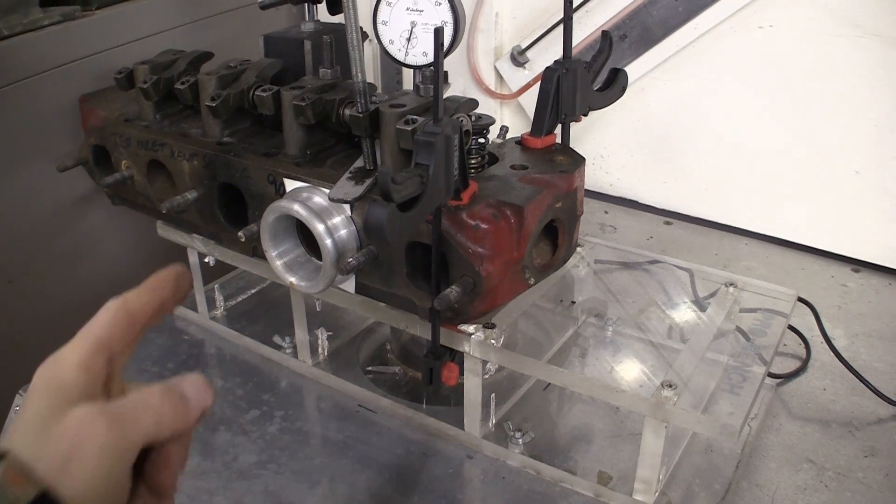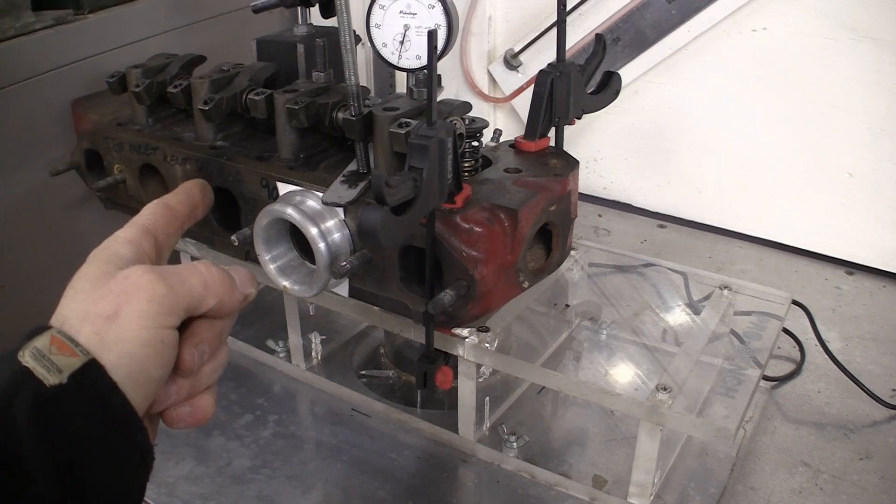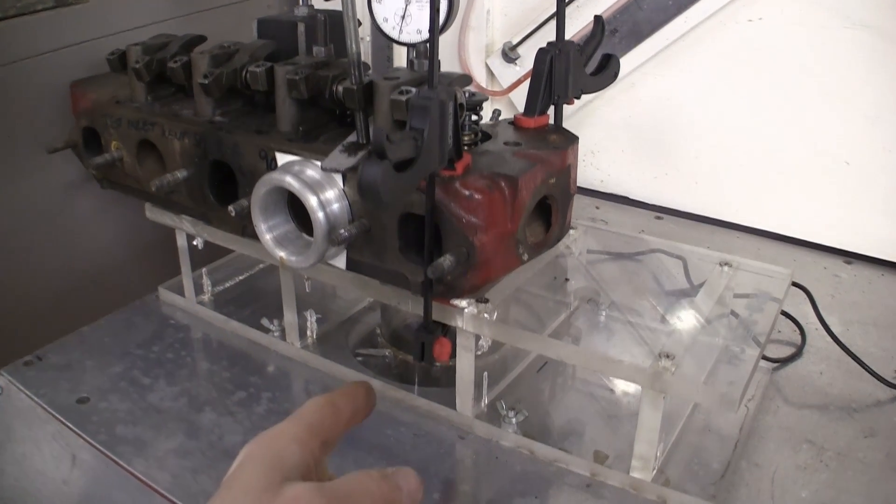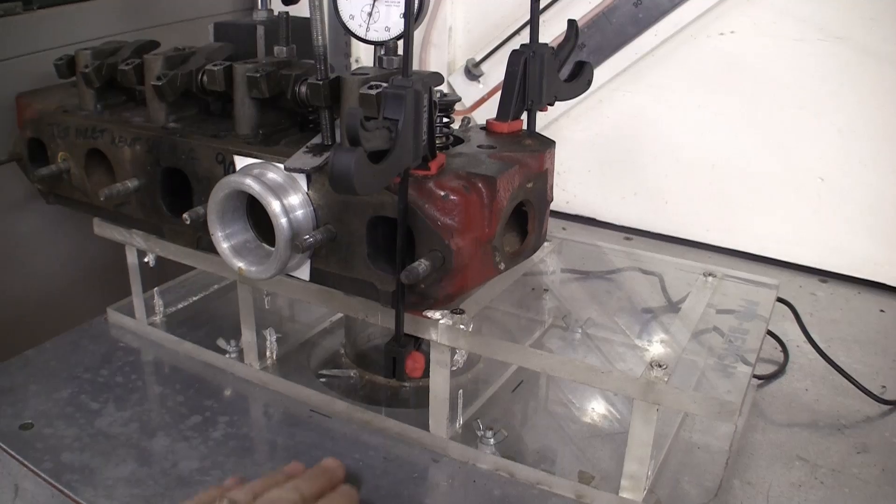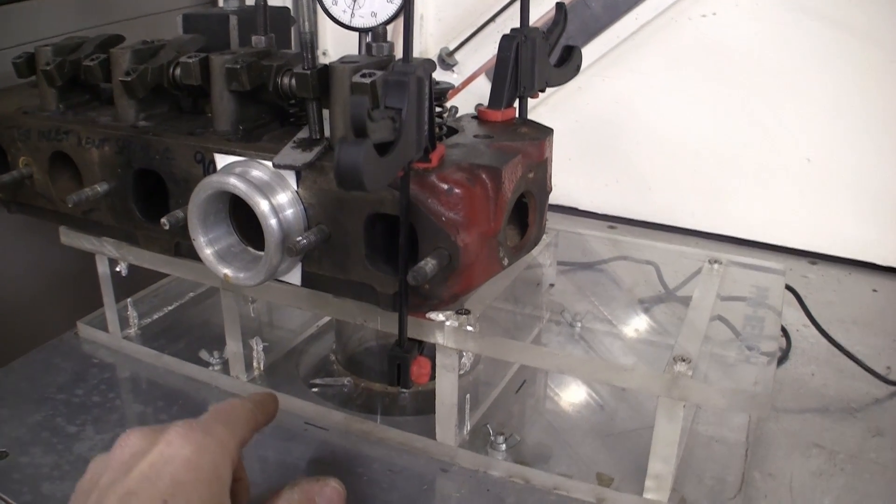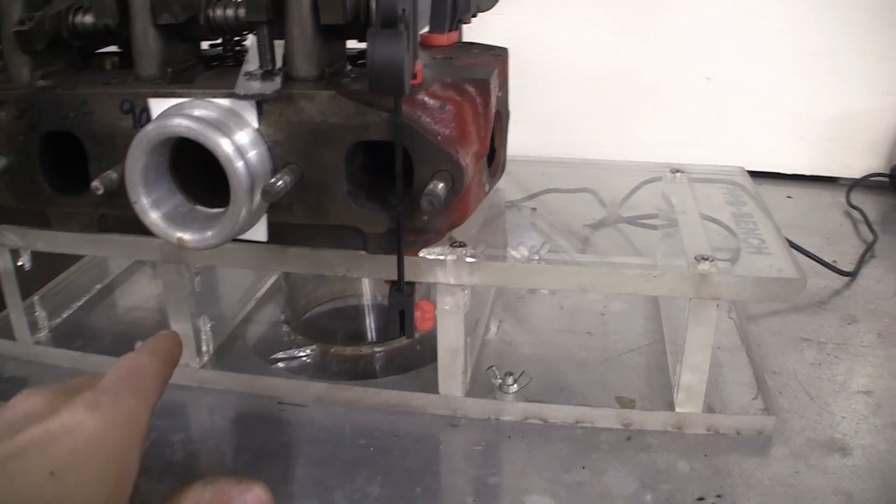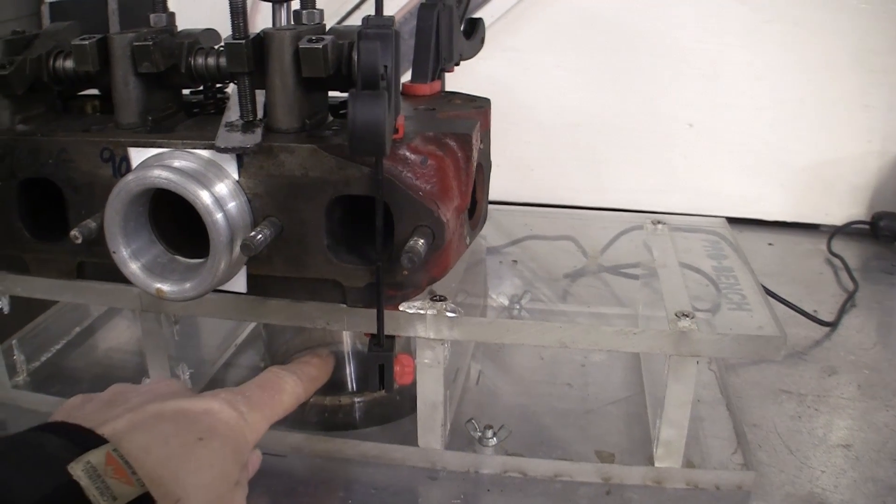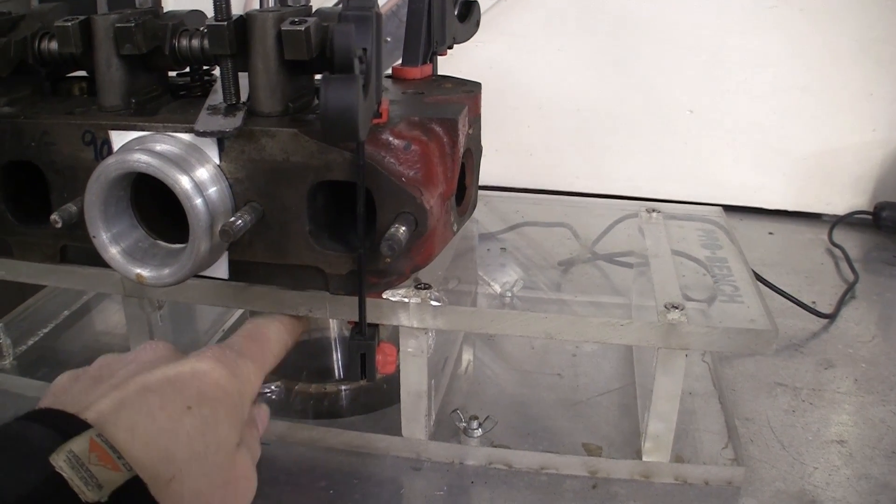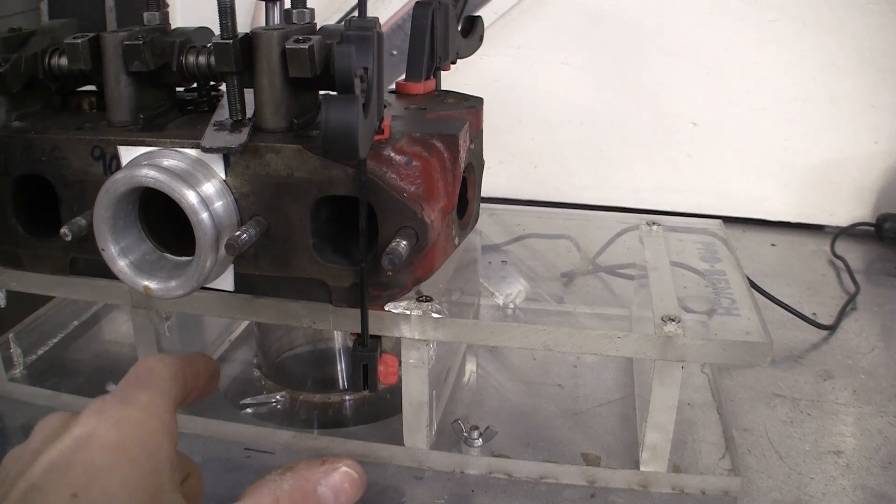So on the top of our floor bench, we have our test piece, which in this case is the cylinder head, and the cylinder head sits on top of a stand there, on top of the floor bench. This stand actually mimics one of the cylinders in your block, so there's a clear perspex tube there that mimics the bore size of a 1275.